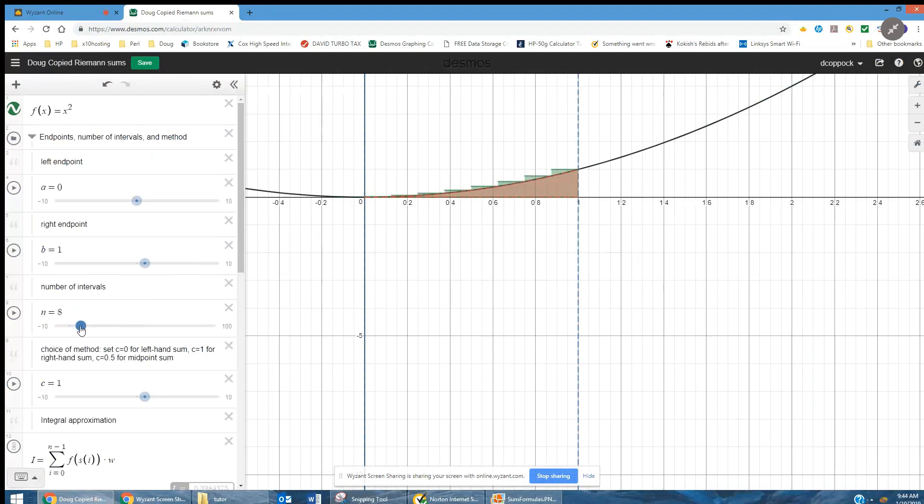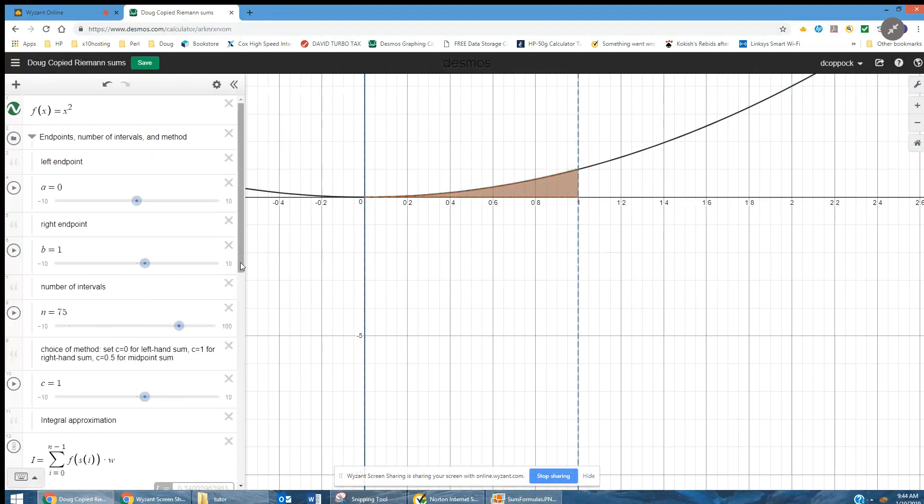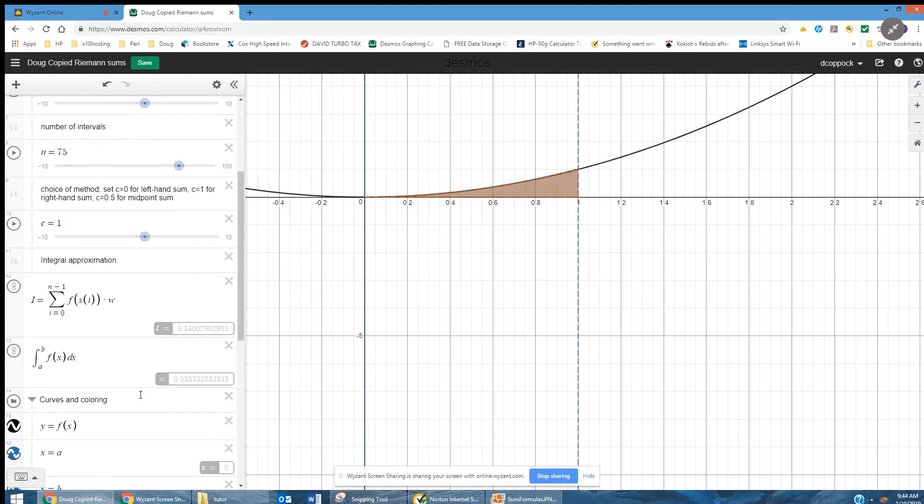The overlap or the overestimate is getting smaller and smaller as the number of rectangles gets real big. We can see down here that the Riemann sum and the definite integral are getting closer and closer to each other.